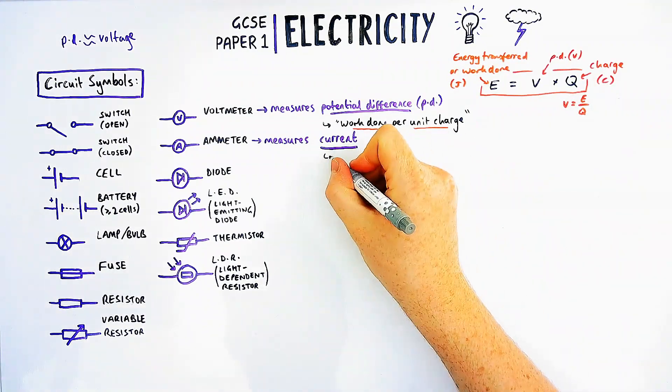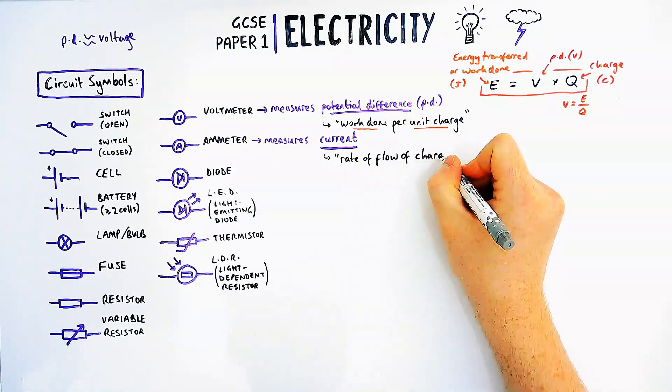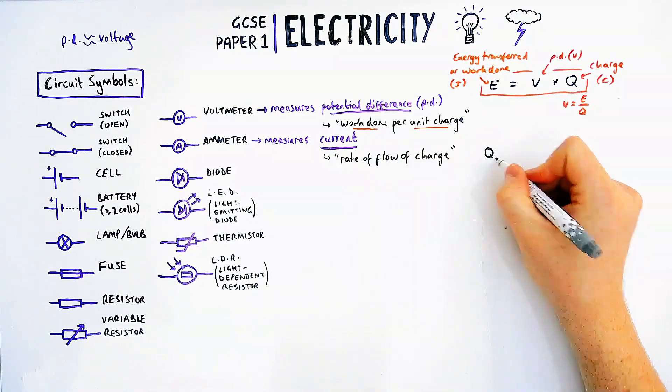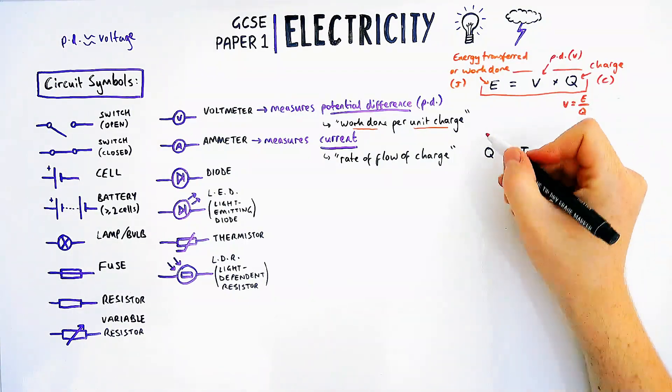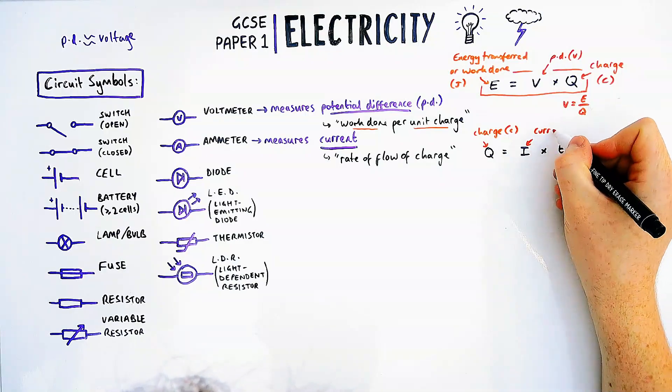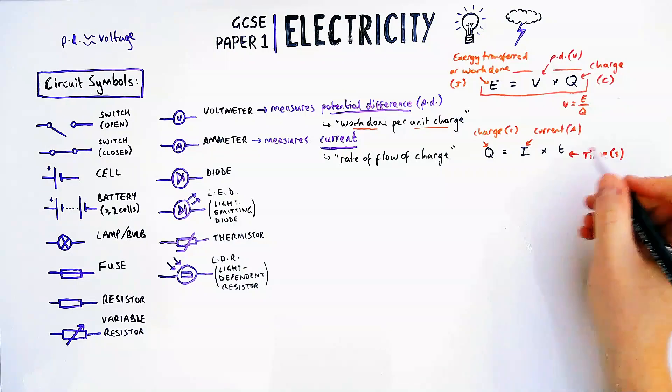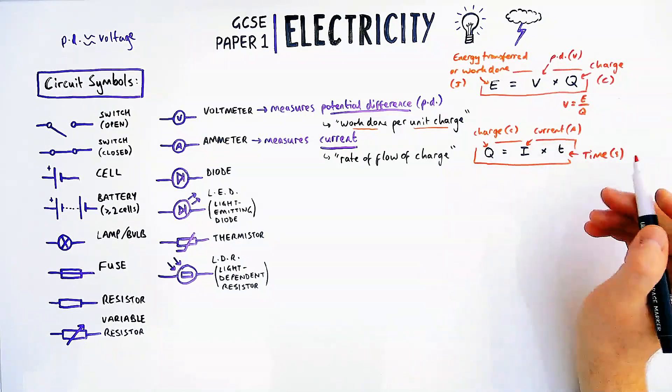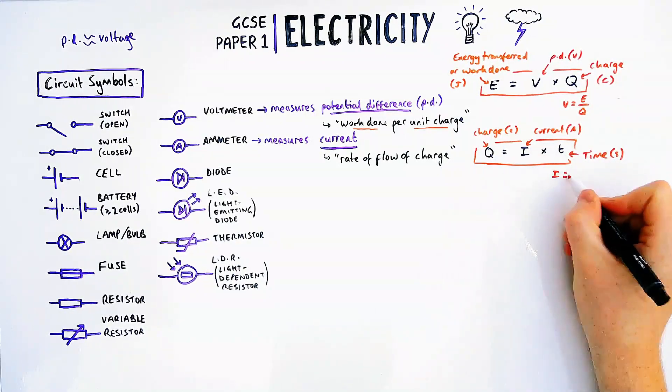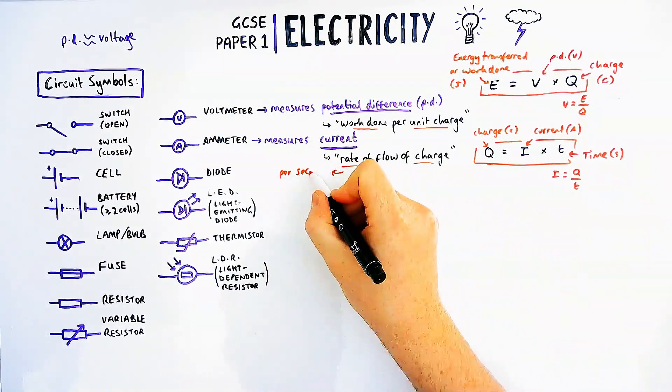An ammeter will measure current. It doesn't measure amps, it measures current - amps is the unit. This is defined as the rate of flow of charge in a circuit. The equation is Q equals I times t. If I rearrange this for I the current, I equals charge divided by time, which is the same thing as saying rate of flow of charge. Don't forget rate just means per second.